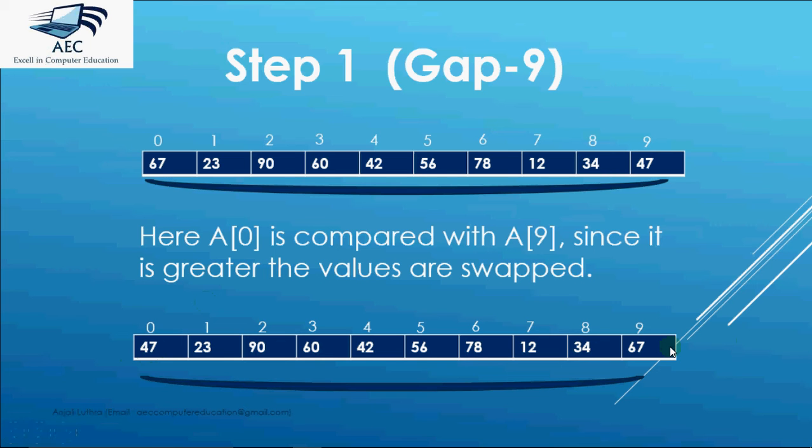Unlike selection or bubble sort where we used to get one of the final numbers at either of the ends, like in selection sort the smallest number used to come at the beginning and in bubble sort the greatest number used to come at the end. Here nothing like that happens.